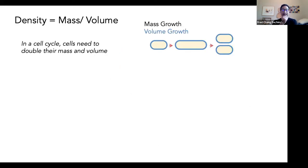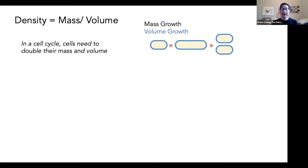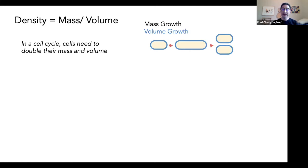When I talk about density, what we really mean is basically mass over the volume of the cell. During a cell cycle, as the cells are growing, they need to double their mass and their volume before dividing. I'll be talking about mass growth — how much all the insides of the cells increase as cells grow, so the cells are making more proteins, more organelles, things like that. This can be distinguished from volume growth, which is basically how much bigger the cells are getting as they grow, which in our yeast has something to do with how quickly you're building the cell wall.